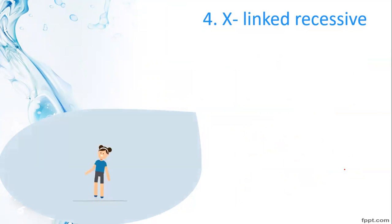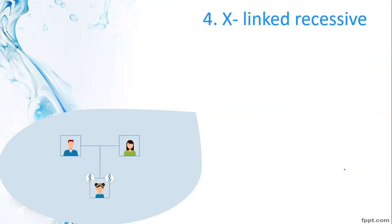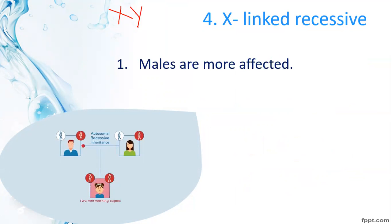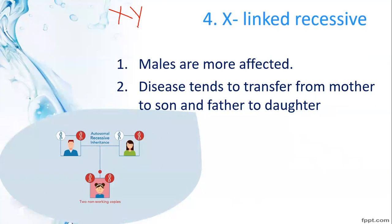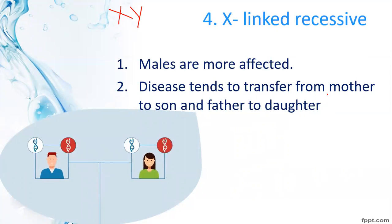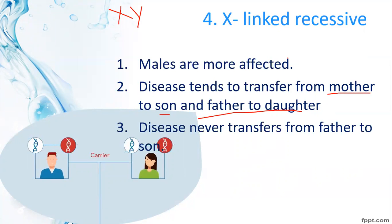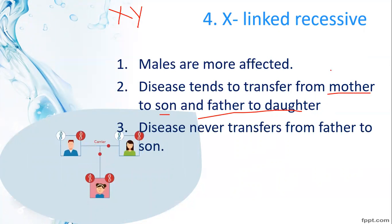X-linked recessive disease: the first rule is that males are more affected because of their hemizygous condition (X and Y). The disease tends to transfer from mother to son. The transfer pattern is: mother to son, and father to daughter. Critically, the disease is never transferred from father to son. The grandfather can pass it to grandsons through daughters.